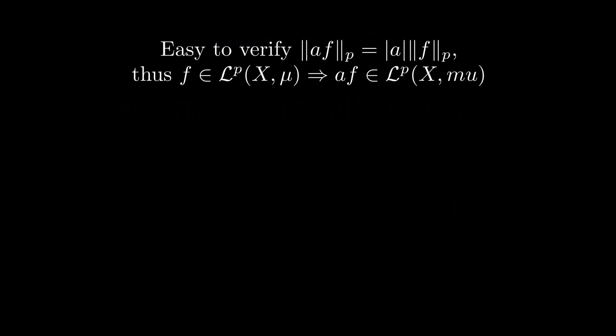The absolute homogeneity of the p-norm simply follows by the homogeneity of the integral for p lower than infinity. For p equal to infinity, it is also simple to see that the supremum norm is absolutely homogeneous. Thus, we may scale any function in these spaces, and we'll get another function in the same space.